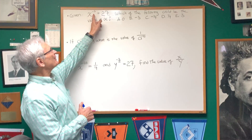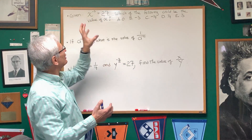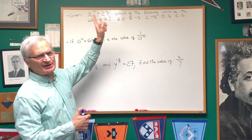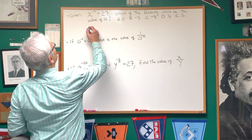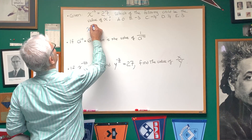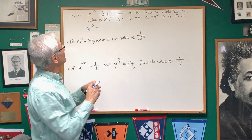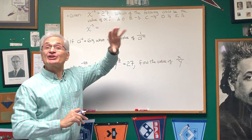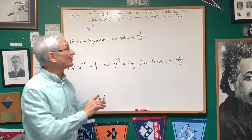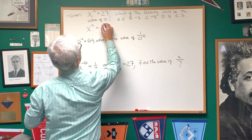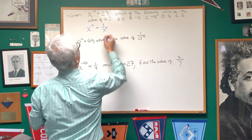The difficulty with exponents is that there are instructions compressed in that little space in the exponent. We have x to the minus three. This breaks down into two instructions: the negative sign means reciprocal, and the three means take it to the third power. So this could be rewritten as one over x to the third power.